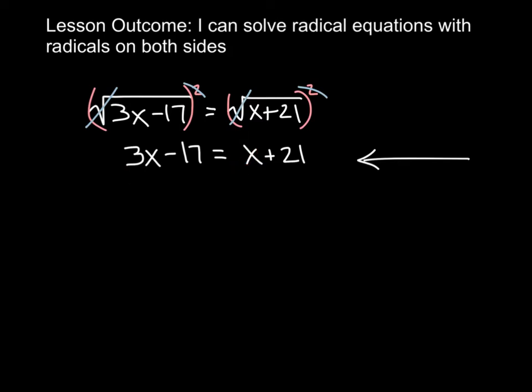Well first we have to make sure we get all the variable x terms on the same side of the equation. So we're going to start doing that by subtracting this 1x from this side of the equation, as long as we subtract it from the other side. So here, 3x minus, remember what this is is 1x, so 3x minus 1x is 2x minus 17, equals x minus x cancels out, and equals 21.